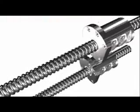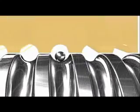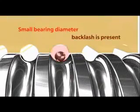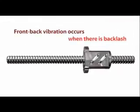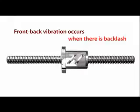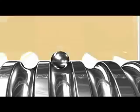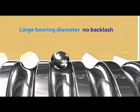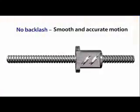Similarly, in the case of a ball screw, when the bearings are relatively small, backlash exists and the nut will tend to vibrate back and forth as it performs its reciprocating motion. In contrast, when the bearings have a relatively large diameter, there will not be any backlash and preload will exist, meaning there will be no vibration.